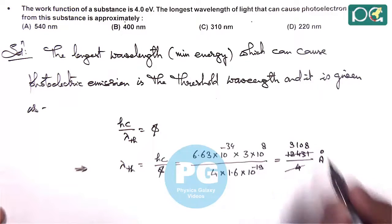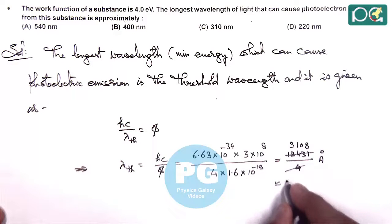We are getting approximately 3108 angstrom, which is approximately 310.8 nanometer. This is the wavelength we are getting.